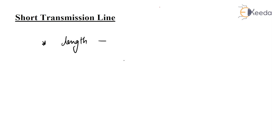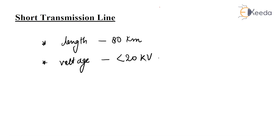For a short transmission line, when the length of an overhead transmission line is up to 80 km and line voltage below 20 kV, then it is usually considered as a short transmission line. The effects of line capacitance are neglected, so while studying the performance of a short transmission line, only resistance and inductance of the lines are taken.